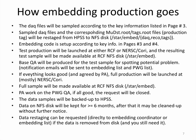After sampling the ADC files, we also need to grab the corresponding MuDST and text files from the real data production, corresponding to the production tag specified in the embedding request. Therefore, embedding production can only begin after data production is finished. These files contain vertex information, refMult, and other reconstructed variables needed for embedding. All these files are restaged from HPSS to NFS disk.